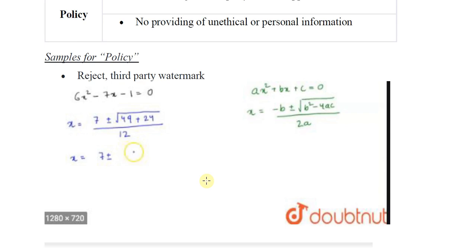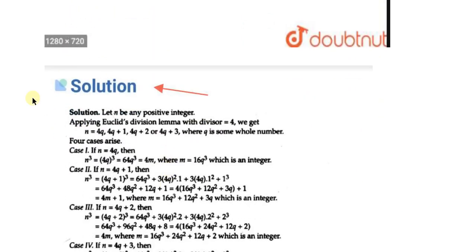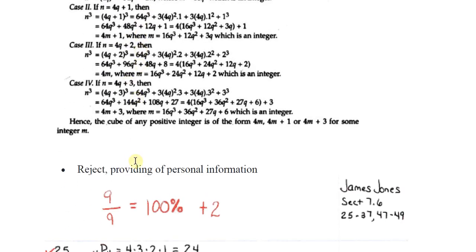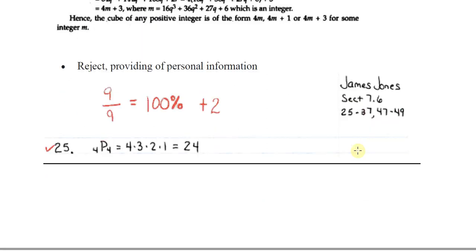Looking at policy samples: if a third party company logo is present in the answer, we have to reject it. Similarly, if a solution contains a logo symbolizing another company like SnapSolve, we must reject that answer as well — no such logos should appear. For personal information, if an answer contains someone's name like 'James Jones,' that is personal information and the answer must be rejected.